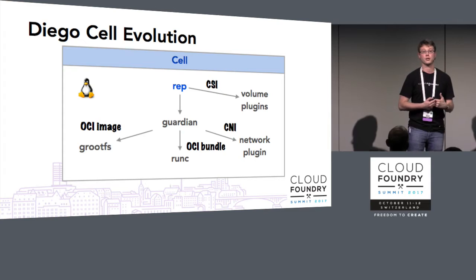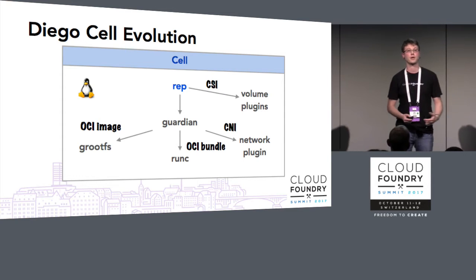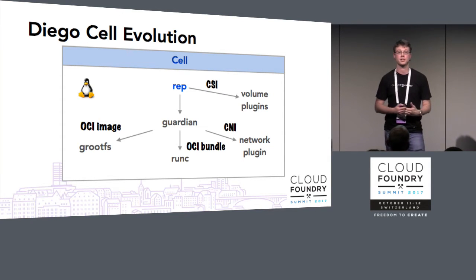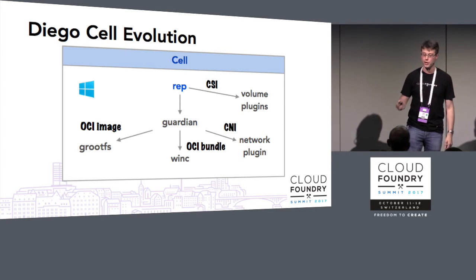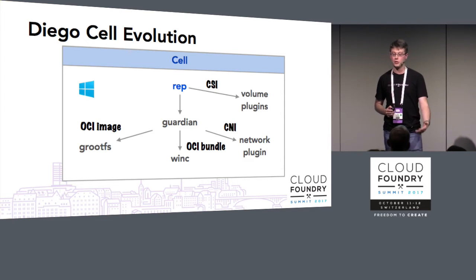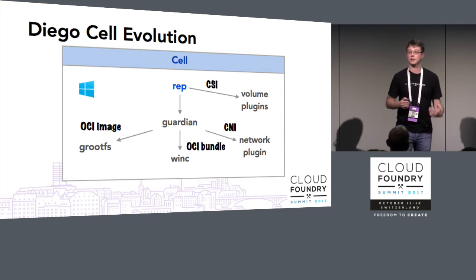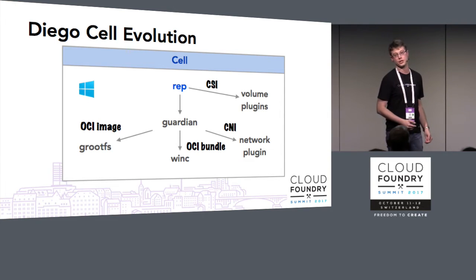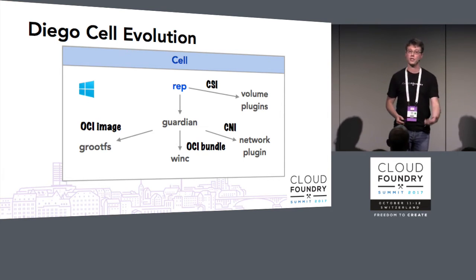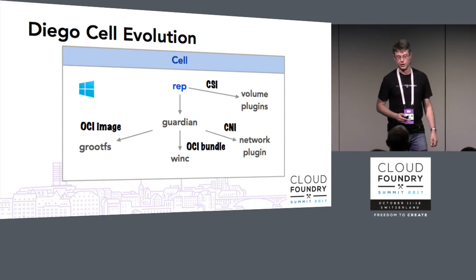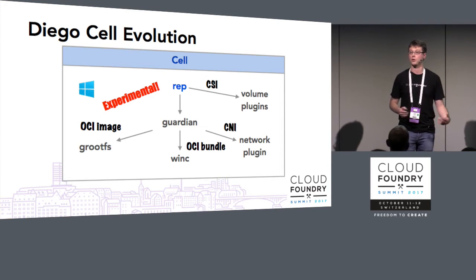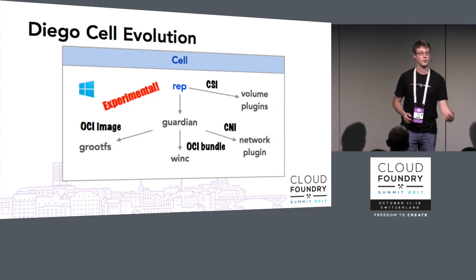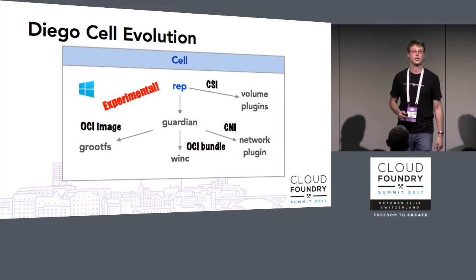There are other talks on this track discussing those efforts. Another exciting thing is that we're bringing all of this to Windows too. The Garden Windows team has been looking at the OCI bundle standard and building a Windows implementation called WinC. Even today you can experimentally run Windows cells on Windows 2016 that will make Windows Server containers, and we've got another talk on this track discussing that effort.